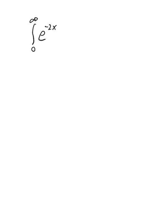Let's do an improper integral: the integral from 0 to infinity of e to the minus 2x dx. Using the fundamental theorem of calculus, we need an antiderivative. The antiderivative of e to the minus 2x is e to the minus 2x, but taking the derivative gives a minus 2, so we put a minus one-half out front, with limits 0 to infinity.